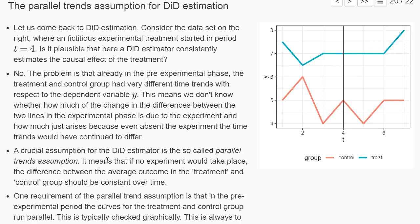There's one important assumption for the difference-in-differences estimation that we have to discuss: the so-called parallel trends assumption. Consider the data here on the right — we have a treatment group and a pre-experimental period, and a period where the experiment takes place, and also a control group in red. Looking graphically at this dataset, is it plausible that the difference-in-differences estimator consistently estimates the causal effect of the treatment? Most people would say no. The problem is that already in the pre-experimental phase, the treatment group and the control group have very different time trends.